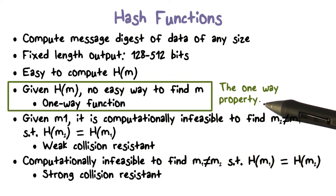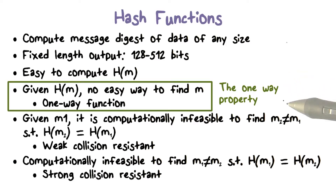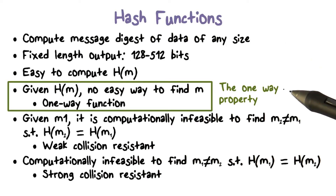For example, we can authenticate a message by hashing a secret value together with a message. The secret is not sent; the hash and the message are sent.